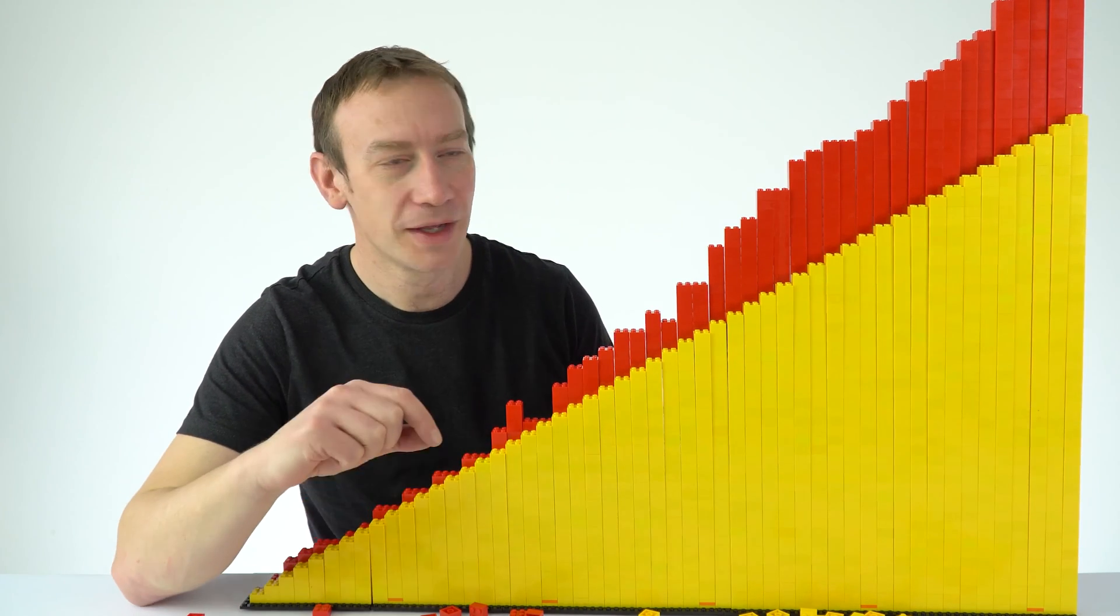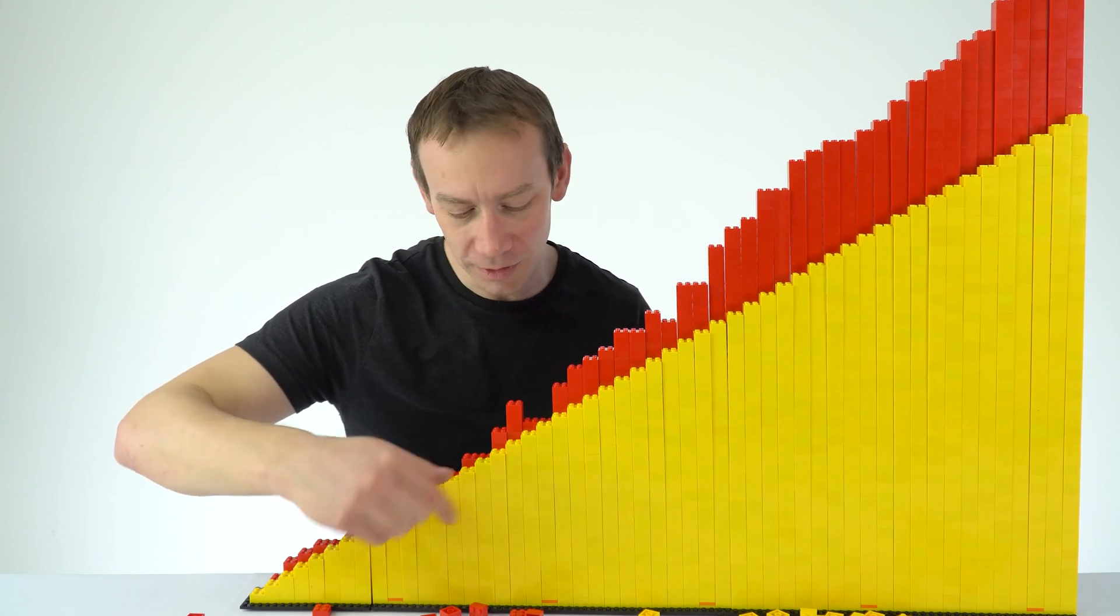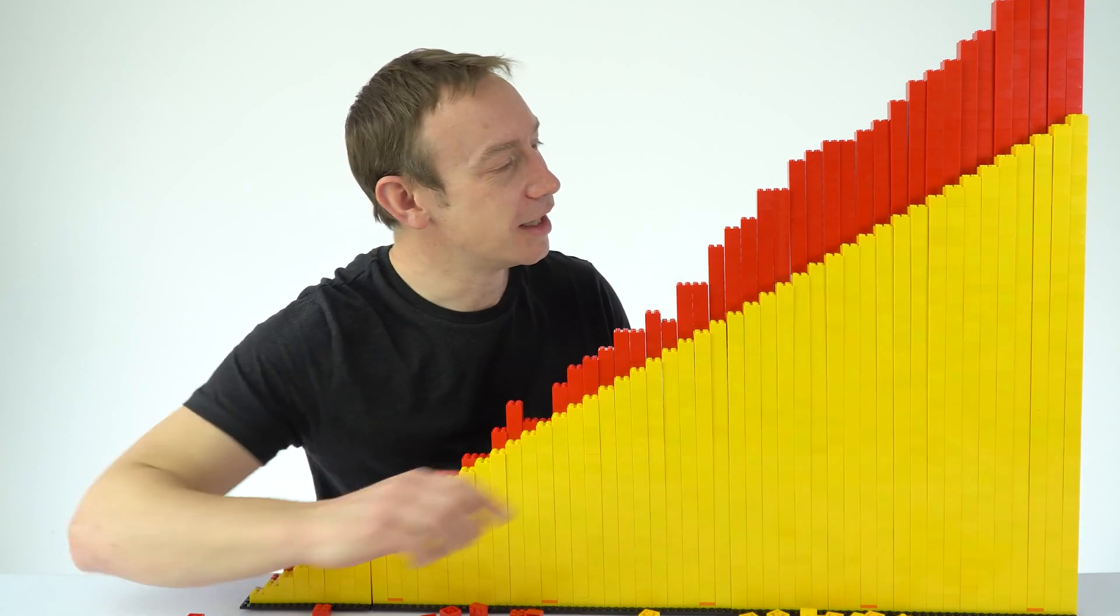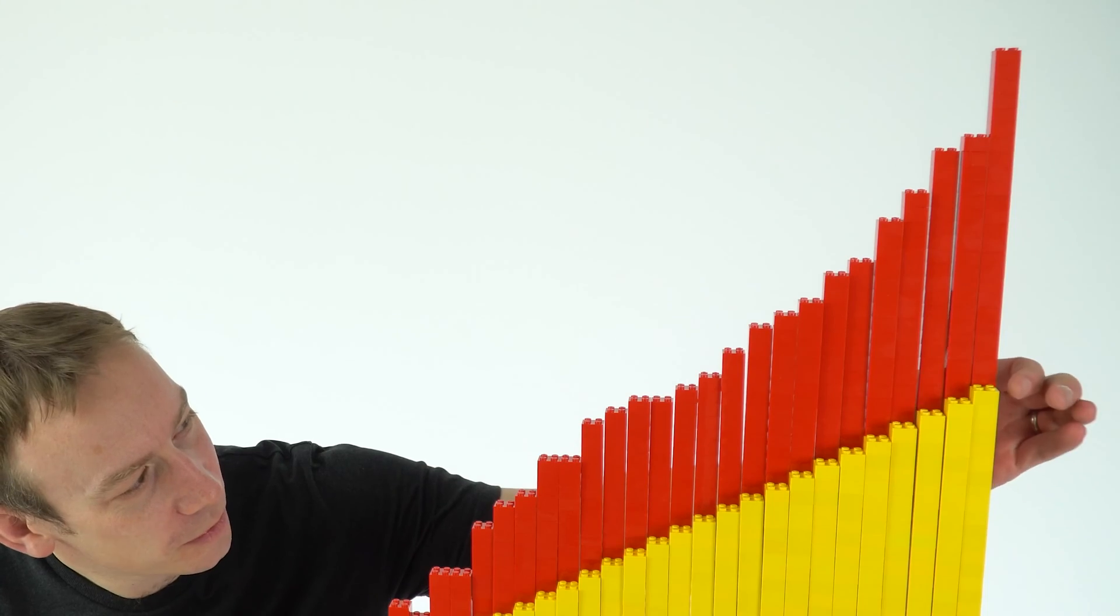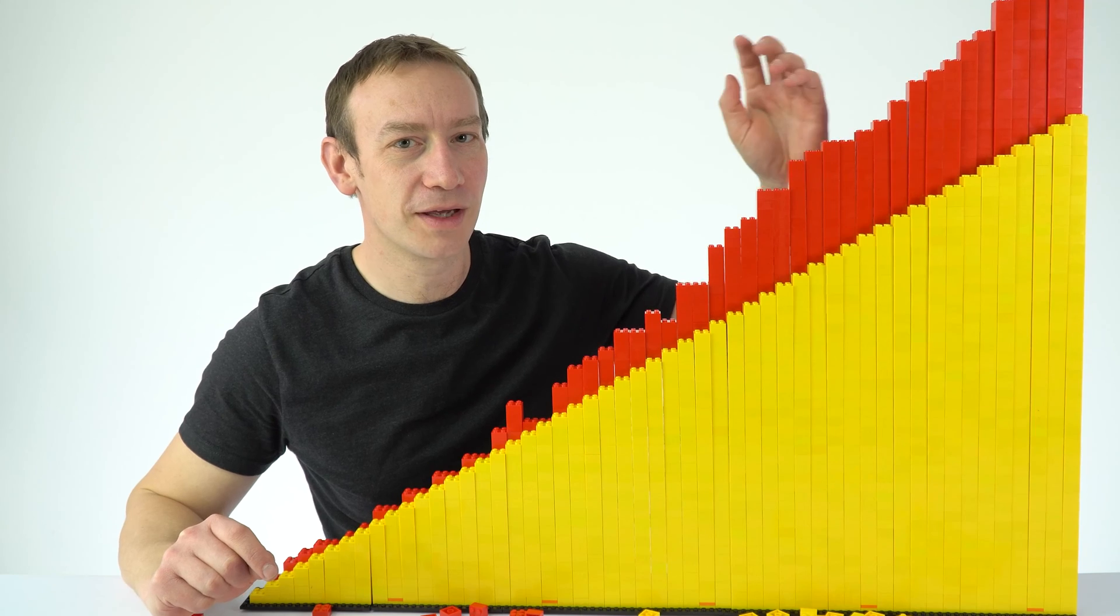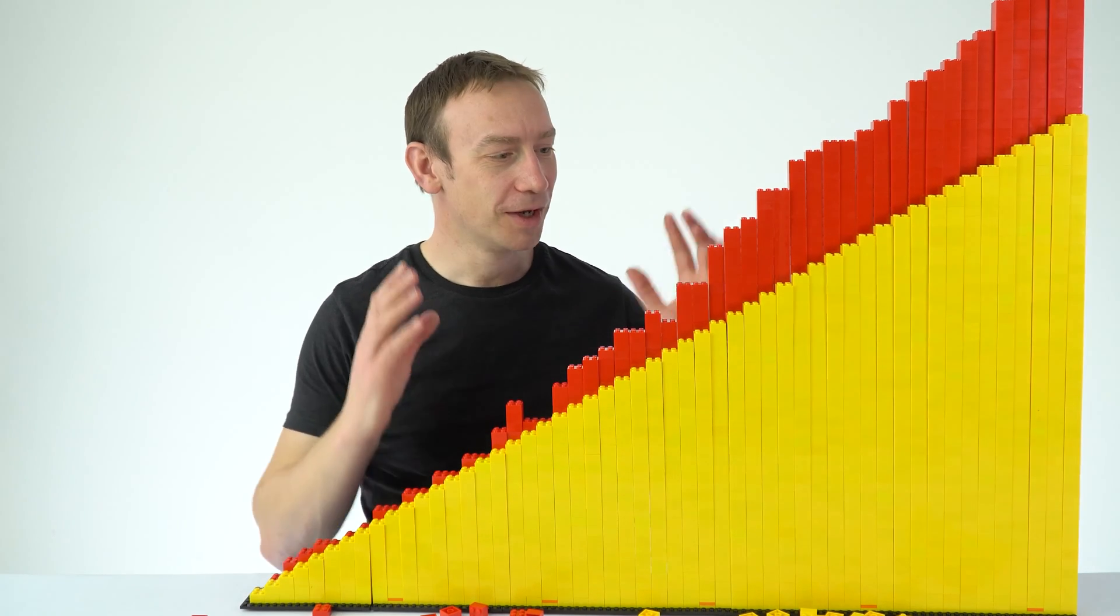And in red we have the number of neutrons which we can see is roughly equal and then after about 20 it tends to get higher and higher and higher. And effectively the more protons we have, we have a bigger excess or a bigger difference in the number of neutrons inside the isotope.